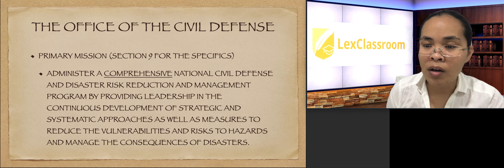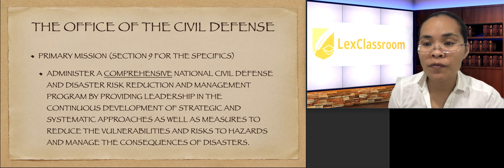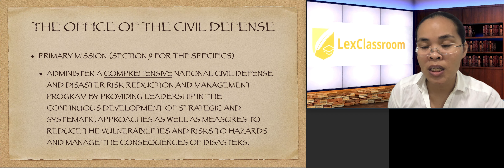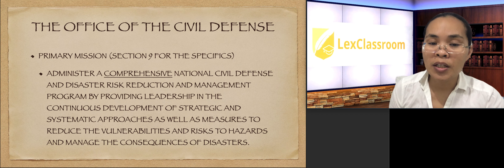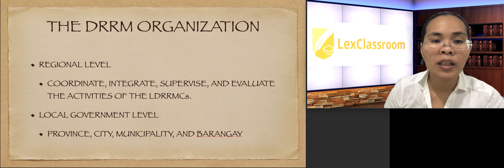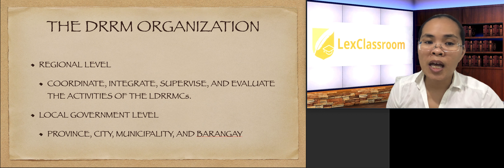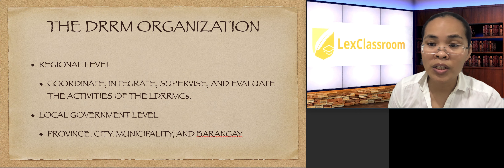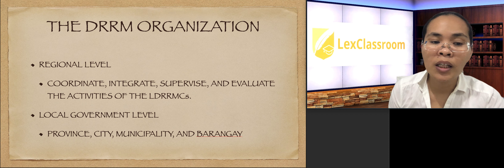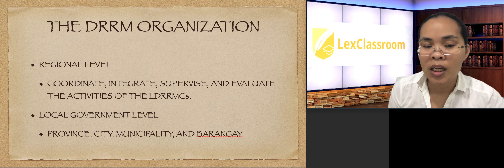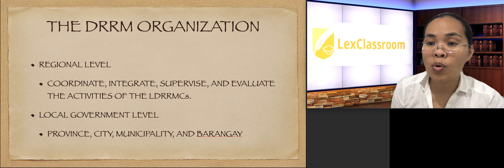If you are interested in the specifics of the powers and functions of the OCD or the Office of Civil Defense, you can check RA 10121, Section 9. Going back, the Disaster Risk Reduction and Management organization has the following levels according to the law: we have the regional level and the local government level.